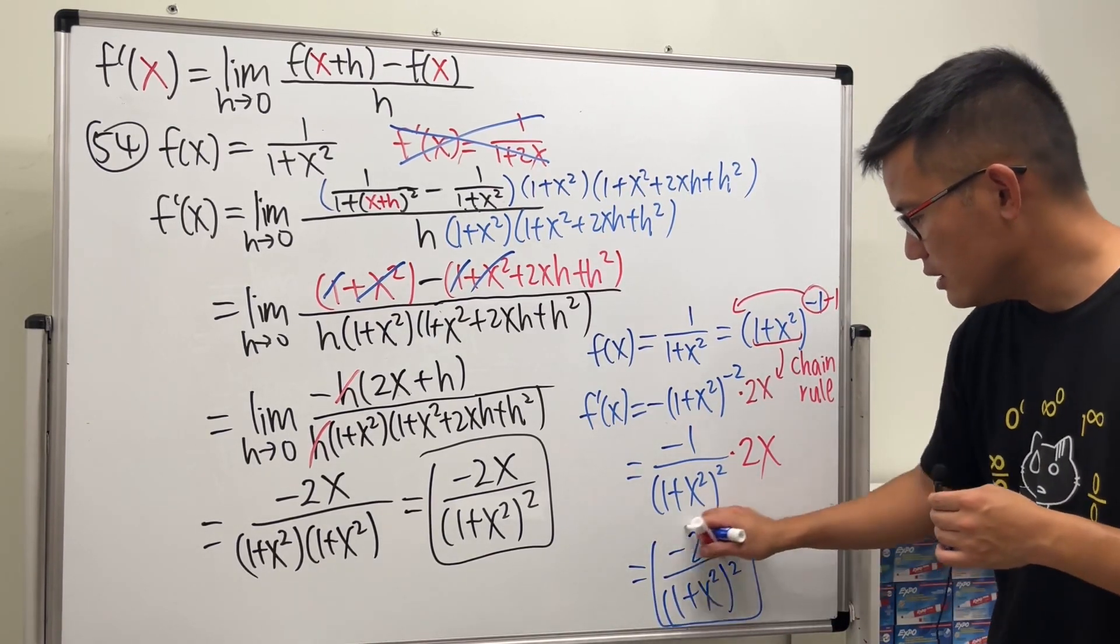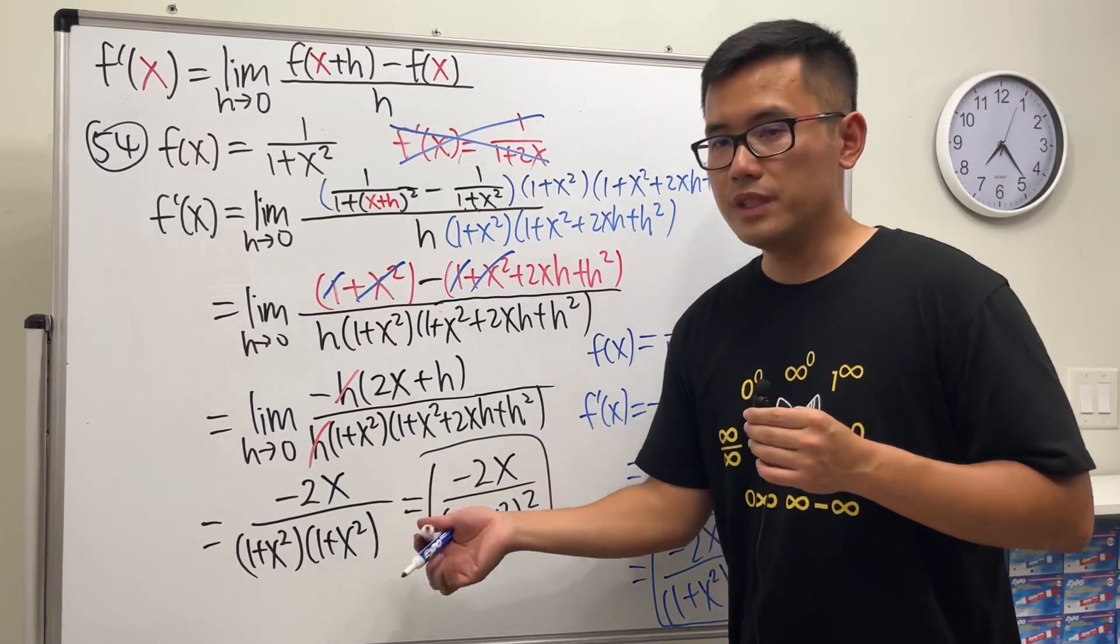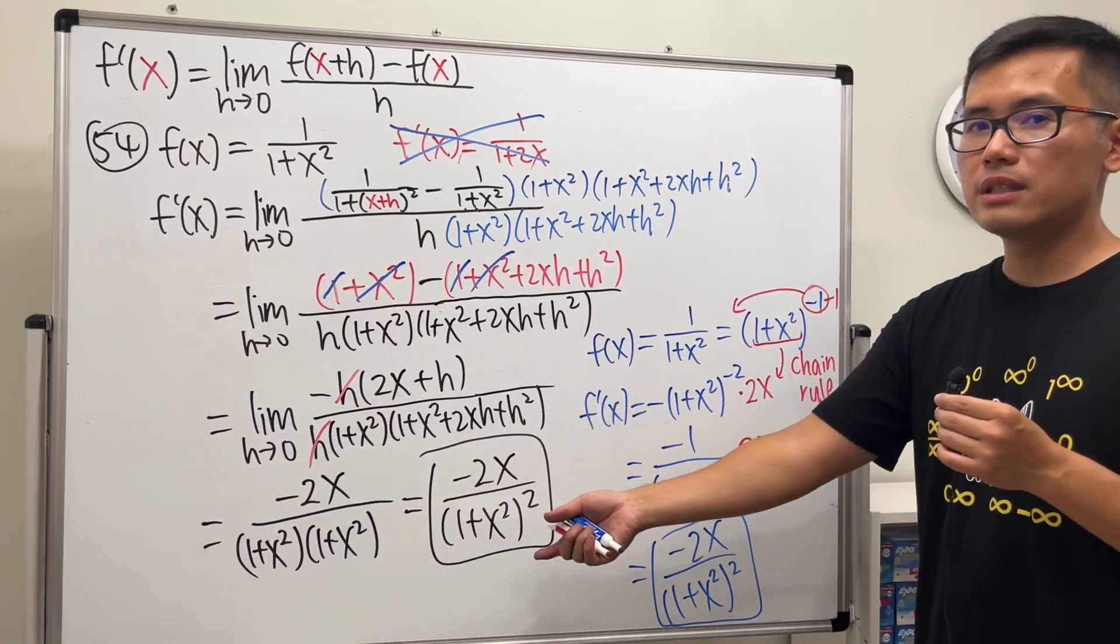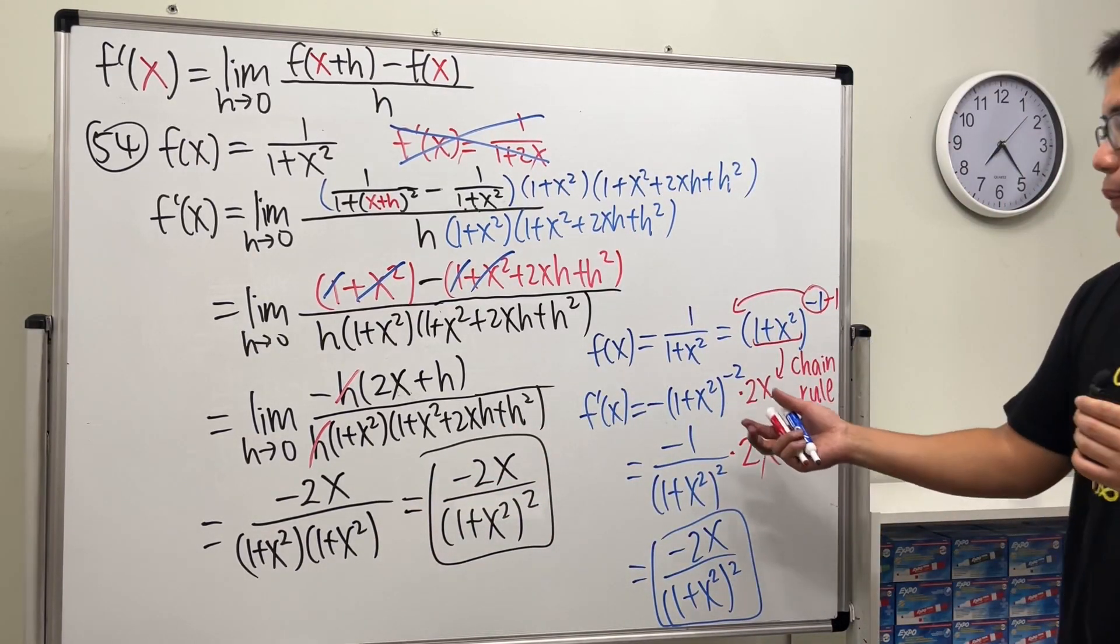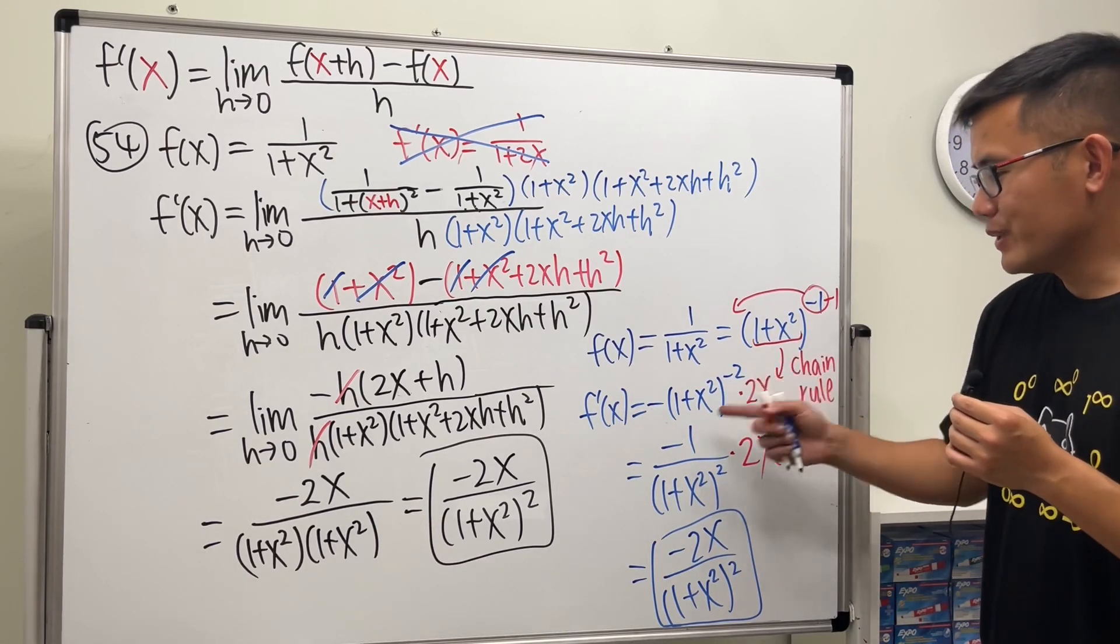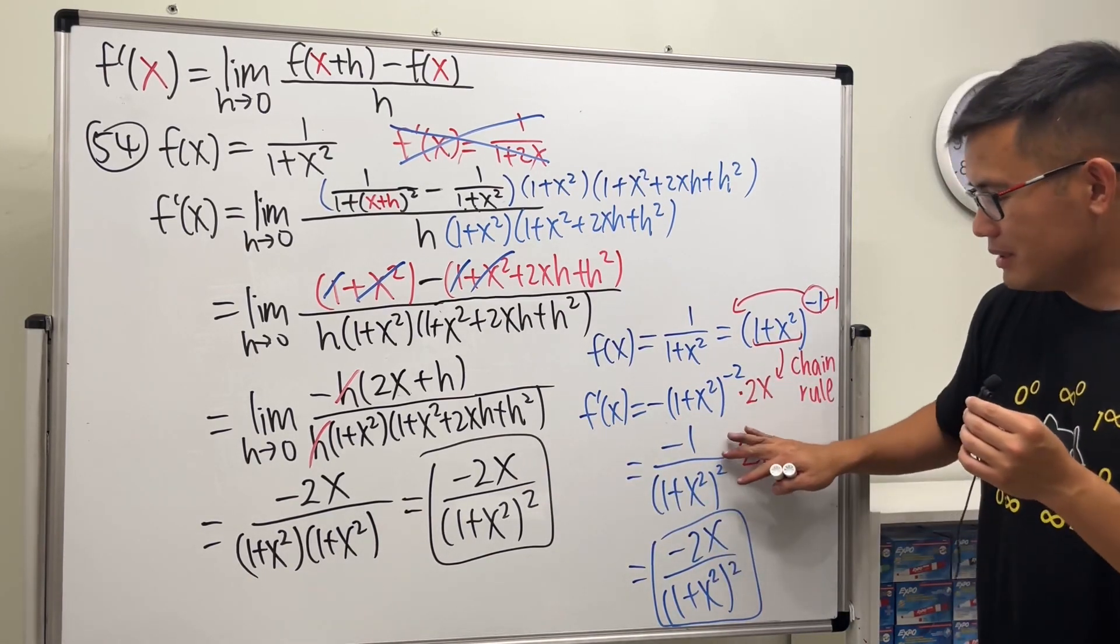So hopefully you guys can see why we need the definition of the derivative. It tells you what has to be right if you want to use the shortcut. Without seeing that, we'll miss the 2x.